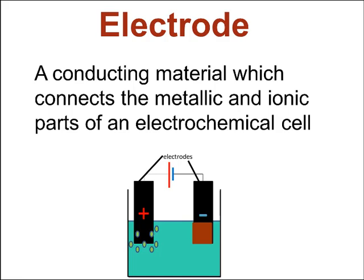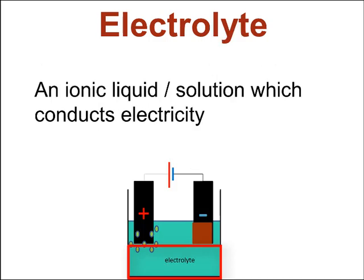What is an electrode? An electrode is a conducting material which connects metallic, these are the metallic parts of the circuit, with the non-metallic. In other words, the ionic parts of the circuit, the electrolyte of the circuit. And that's the next term we look at, electrolyte.